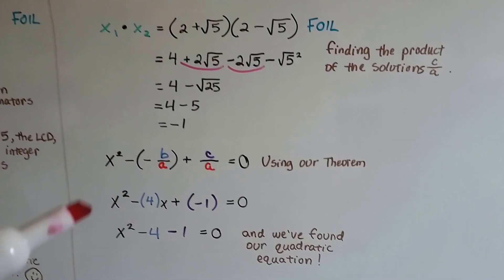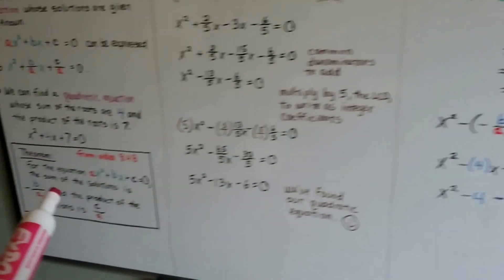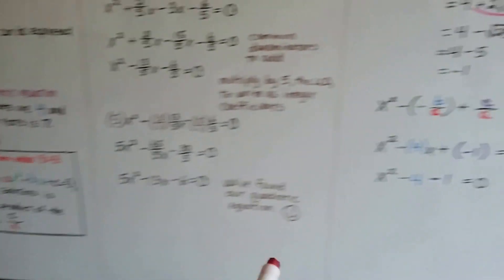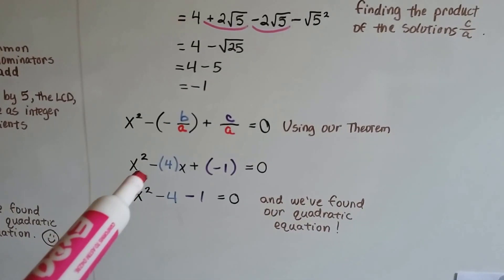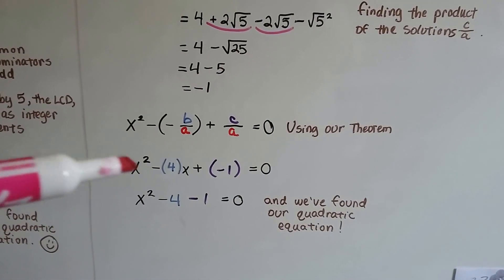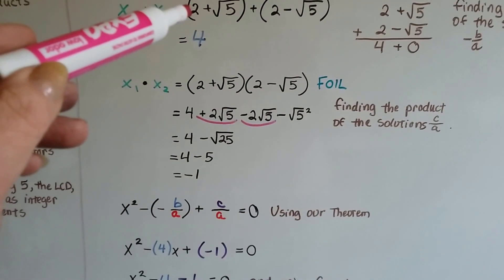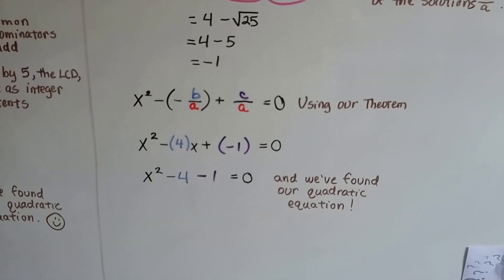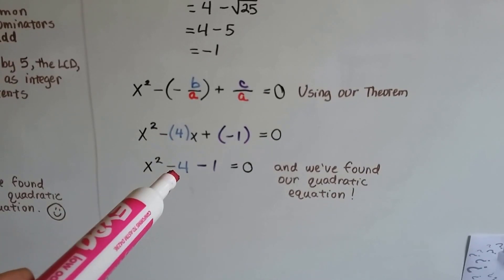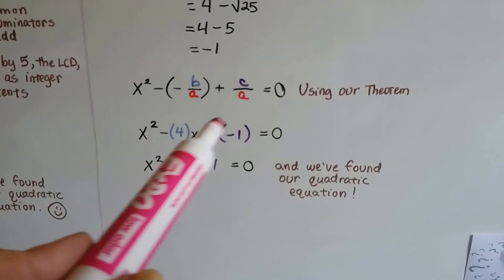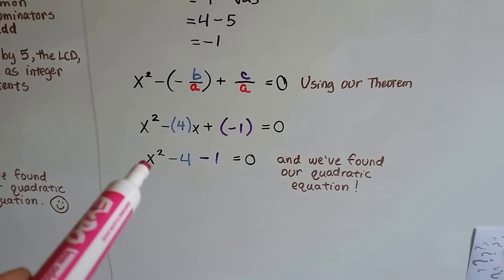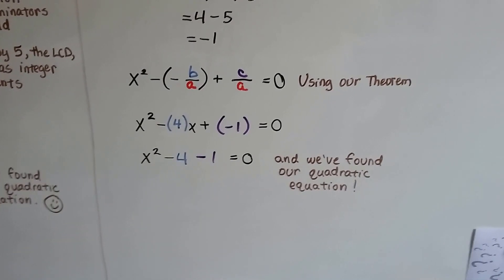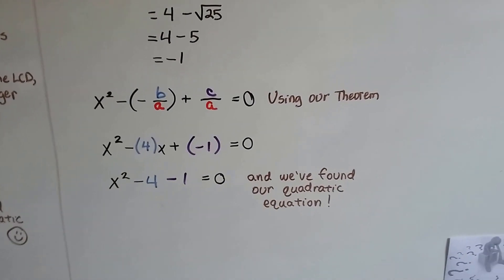Now, using our theorem from the previous video, we're going to substitute in our values here. We've got 4 and -1. So we put our 4 here and our -1 here, and that's going to make this -4. And when we add -1, that's going to be minus 1. So we found our quadratic equation: x² - 4x - 1 = 0.